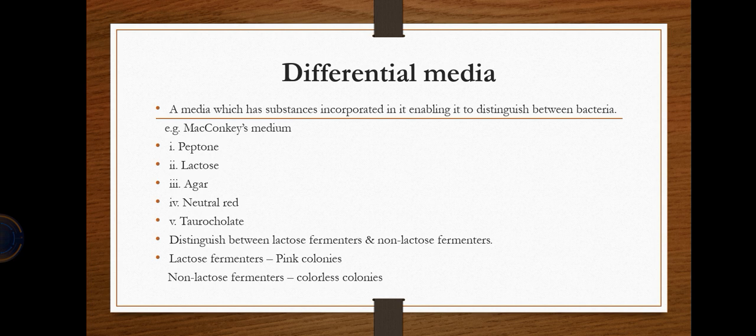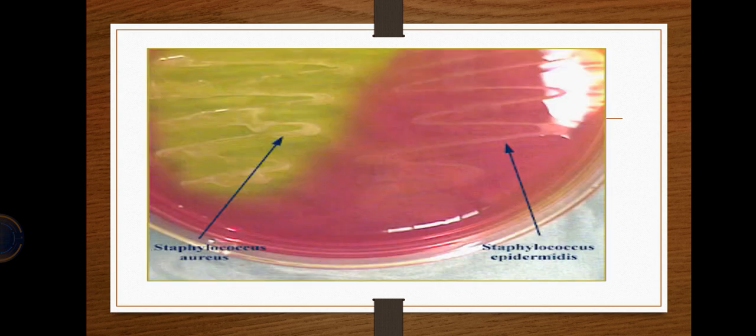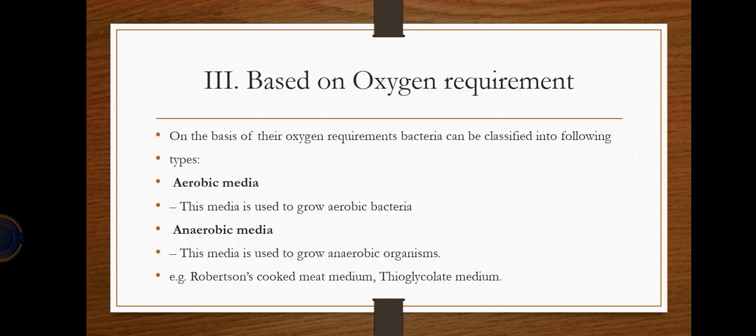Differential media contain substances that help us distinguish between bacteria. MacConkey's media, which contains peptone, lactose, agar, and bile salts, helps differentiate lactose fermenters from non-lactose fermenters. Lactose fermenters form pink colonies, while non-lactose fermenters form colorless colonies. For example, Staphylococcus epidermidis forms pink colonies while others remain colorless.